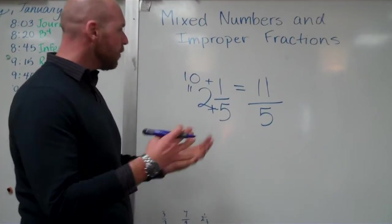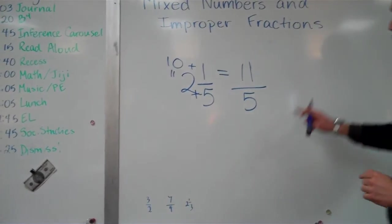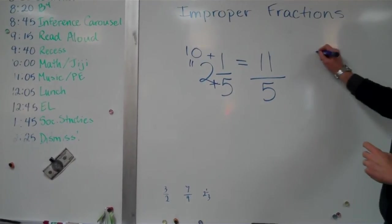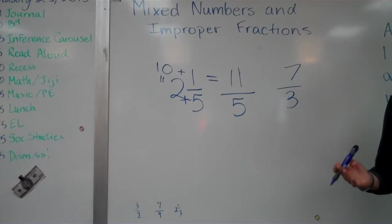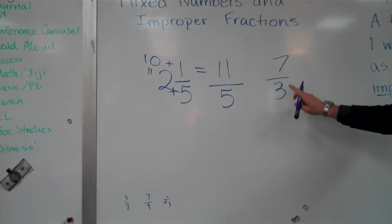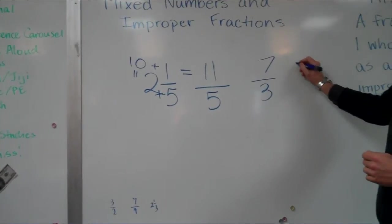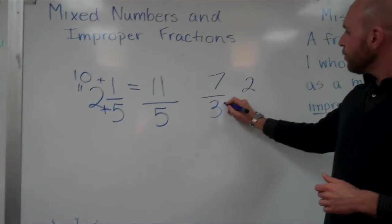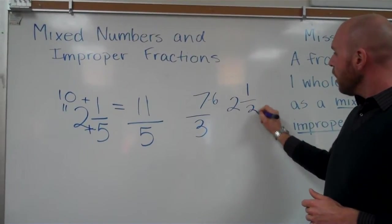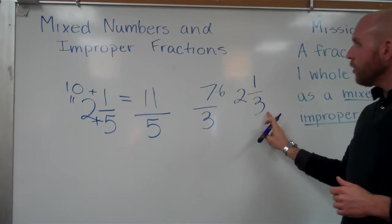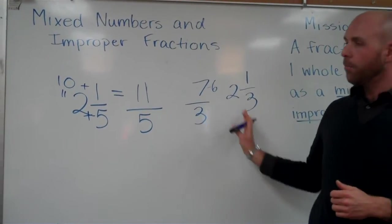Okay. I can do it the opposite way. Let's say I start with an improper fraction. I'll start with seven thirds. Well, how do I do that? I divide three into seven. Three into seven goes two times. Two times three is six. Seven take away six is one. Two and one third is my mixed number from my improper fraction.